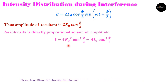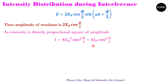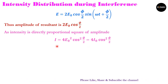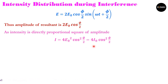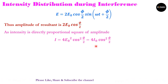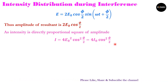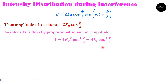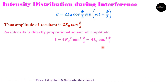Since the interfering waves have the same amplitude, their intensities are also the same. At interference, the resultant intensity is given by 4 times the intensity of the original wave multiplied by cos²(φ/2), where φ is the phase difference between the two waves.